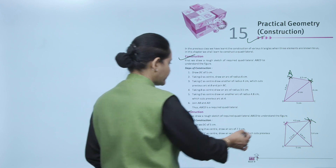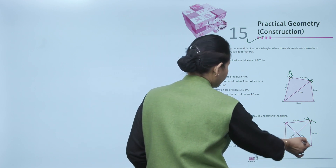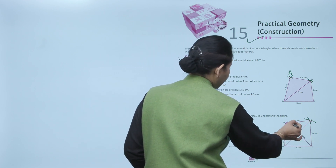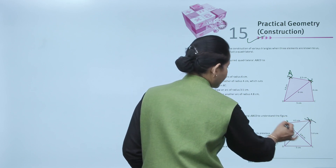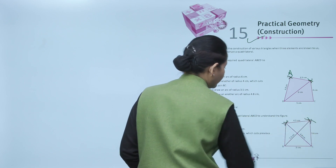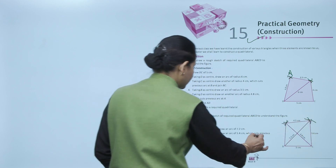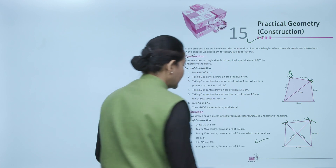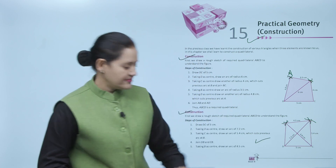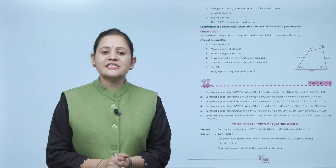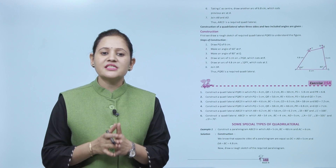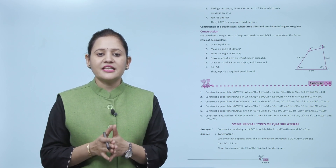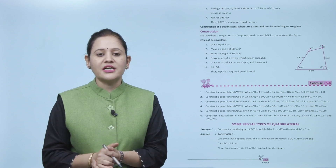Then, with C as a center we drew an arc of 6.8 cm, and with B as a center 4.5 cm, and joined the points. Taking C as a center, draw another arc of 6.8 cm which cuts the previous arc at A. Join AB and AD. Thus, ABCD is the required quadrilateral.